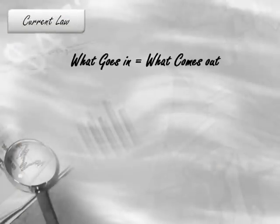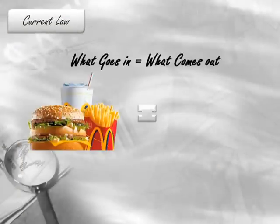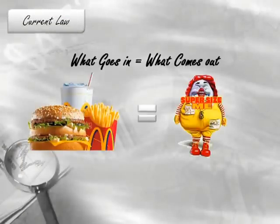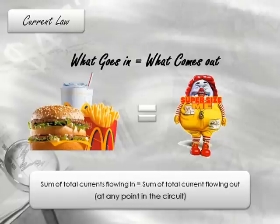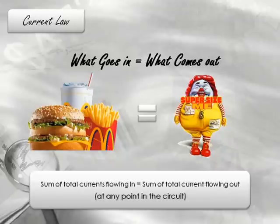The current law simply says that what goes in must come out. In other words, if you look at any point in the network, be it a junction or any other point, the sum total of currents flowing in will be equal to the sum total of currents flowing out. What Kirchhoff is trying to say is that there is no accumulation of charge anywhere in this circuit.